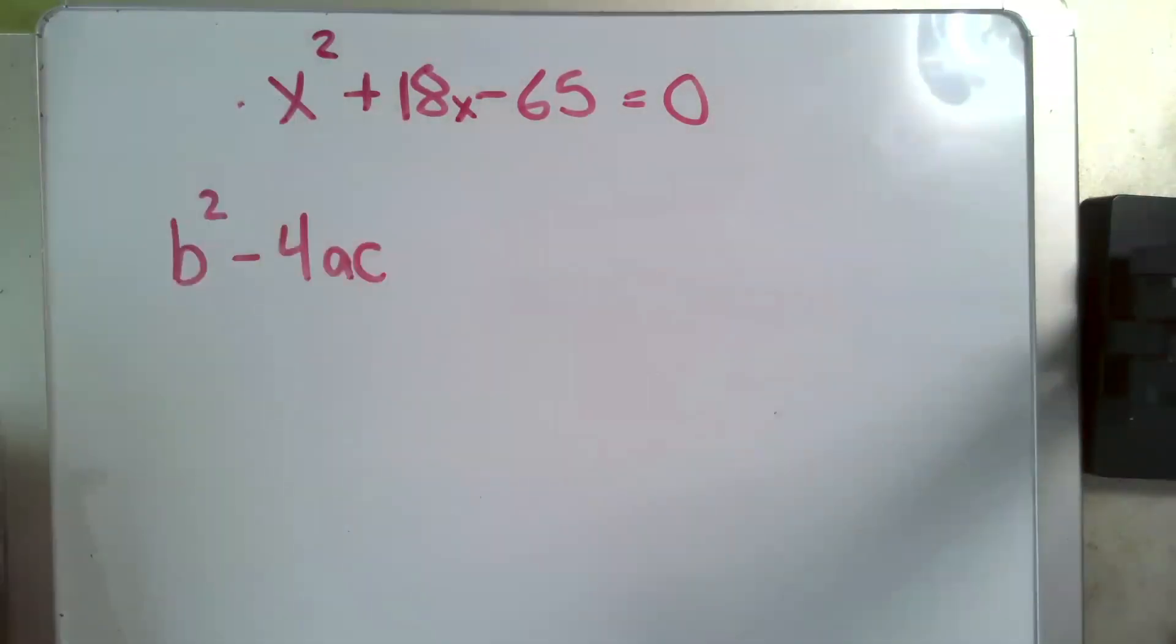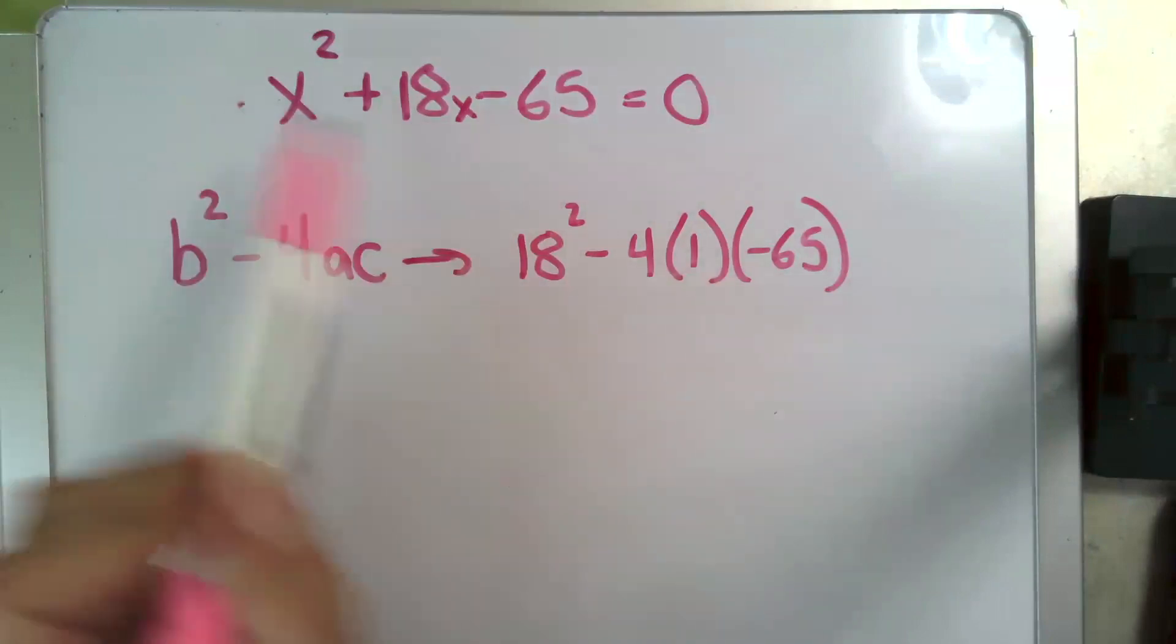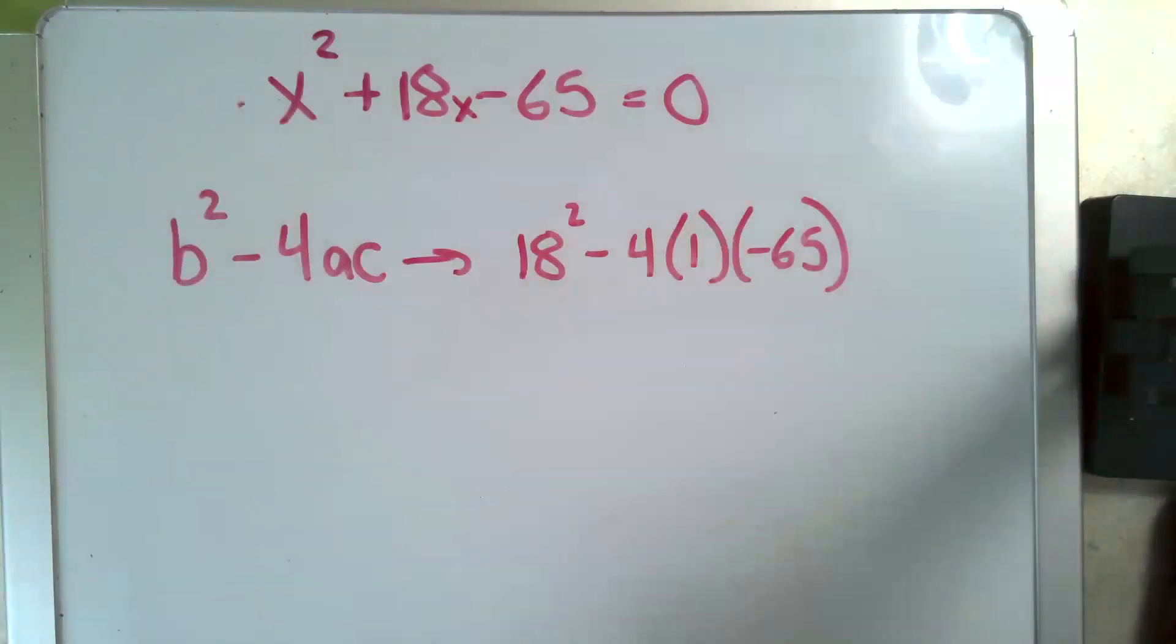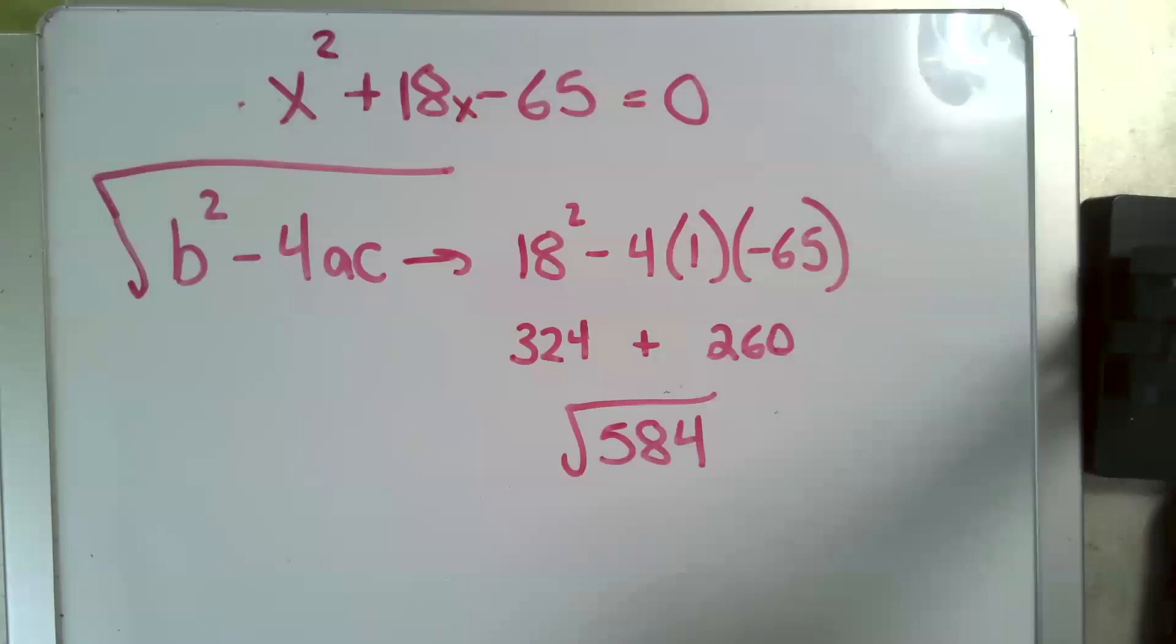So here's the first quadratic equation we'll play with, and this is in standard form, which means ax squared plus bx plus c equals zero, and this is the quadratic formula. And if I put my a, my b, and my c from this equation into these places in the quadratic formula, I will get an answer. The question is, is it real and is it rational? And that answer is found in this part right here called the discriminant.